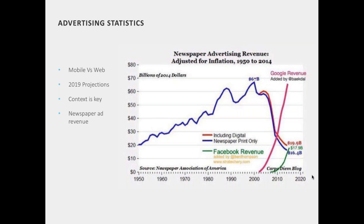By 2019, mobile ad spending will rise to $65.87 billion, or 72.2% of total digital ad spend. It's also worth thinking about the context of the ad — the San Francisco Chronicle was able to double its CPM rates by aligning ads with content and positively targeting by category and keywords. The chart here illustrates the problem publishers face with declining advertising revenue; since 2000 it's almost dropped off a cliff.